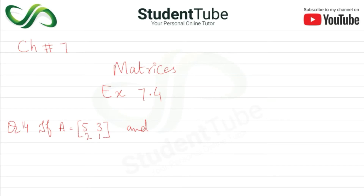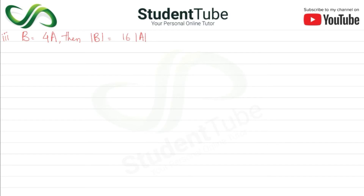Assalamualaikum, welcome to Student Tube. Today's lecture: Chapter 7, Matrices, Exercise 7.4, Question 14. If A is equal to [[5, 3], [2, 1]], we need to prove that if B = 4A, then determinant of B is equal to 16 times determinant of A.